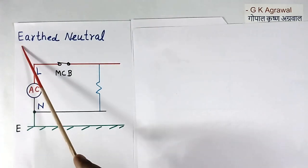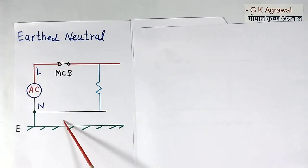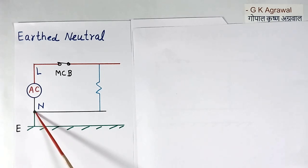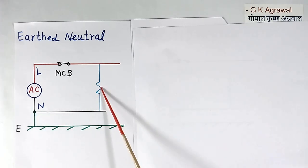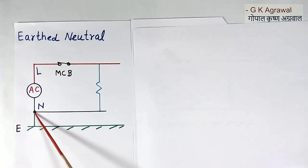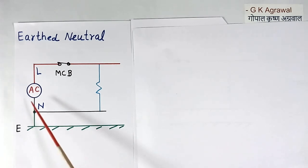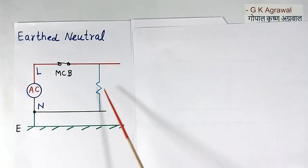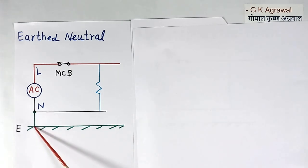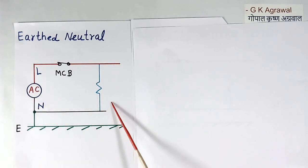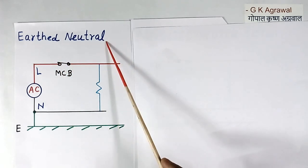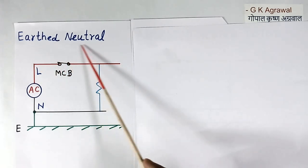I have shown the earth neutral system in this diagram. This is AC supply coming from the substation. This is the load. Here, neutral is connected to earth at the substation. And here we get line, neutral, and earth. Because neutral is connected to earth at the substation, not at the home. So we call it the earth neutral system, or grounded neutral system.